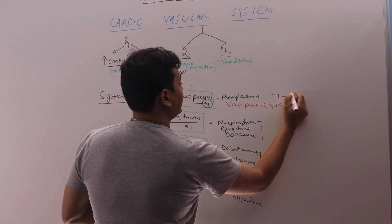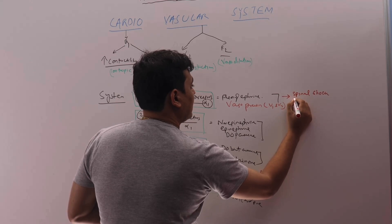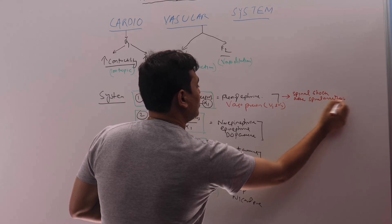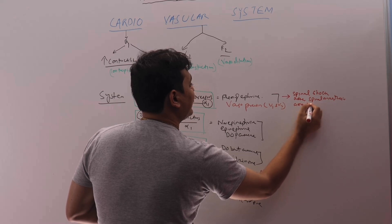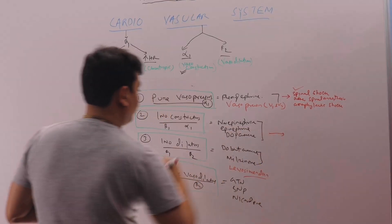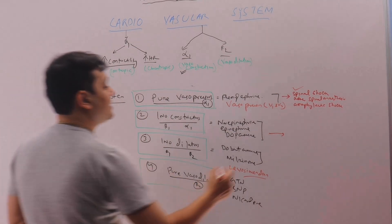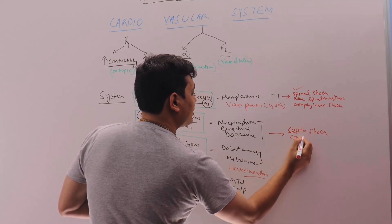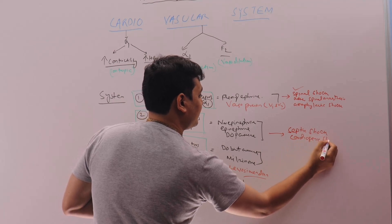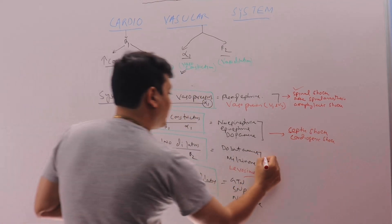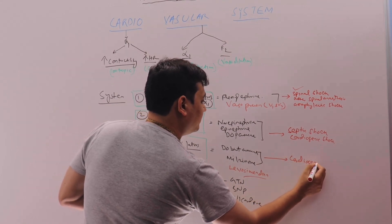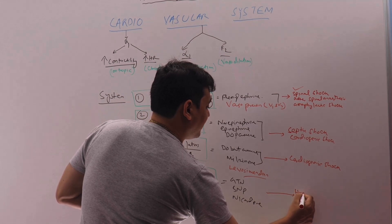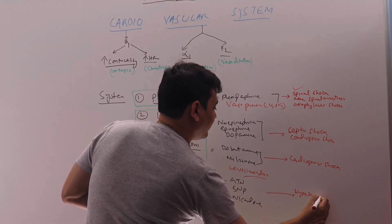Pure vasopressor used in spinal shock after spinal anesthesia. Can be used also in anaphylactic shock if there is no systemic problem. Inoconstrictors are mainly used in vasodilatory states, septic shock, also in cardiogenic shock. Inodilators are used mainly in cardiogenic shock. And these are used in hypertensive emergency.